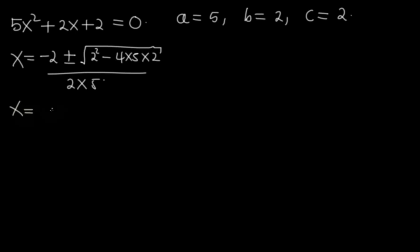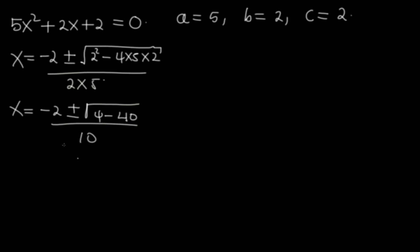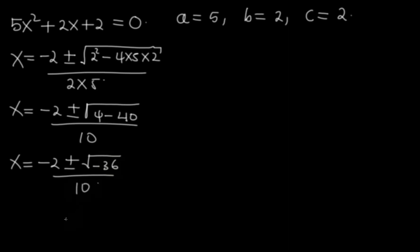So x = (−2 ± √(4 − 40)) / 10. We simplify: x = (−2 ± √(−36)) / 10. When we place this on our calculators, the square root of negative 36 gives us a math error.